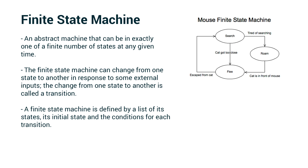Second is the concept of a finite state machine. This is not a concept unique to games, but can definitely be applied here. A finite state machine is a system which consists of a set of states and transitions between those states. It consists of a finite number of states and can be defined by a list of its states, its initial state, and the conditions for each transition. This is exactly what we're going to be building.